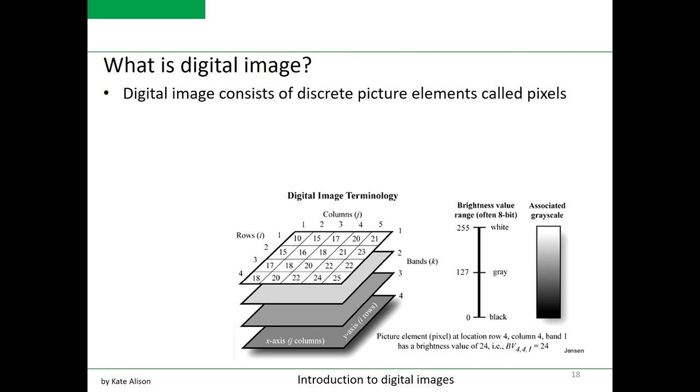In the case of a digital multispectral image, each pixel includes multiple digital numbers, one for each spectral band.